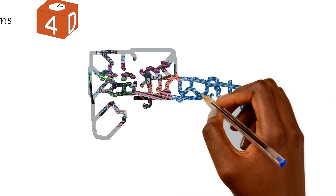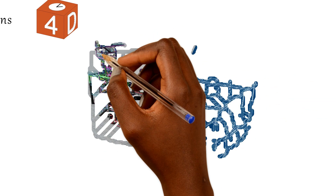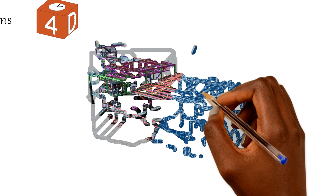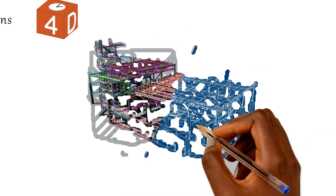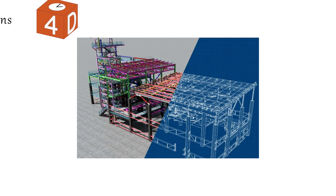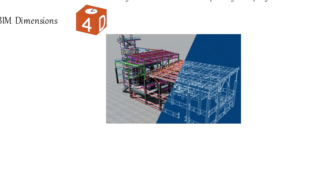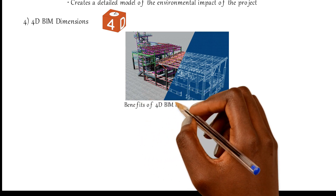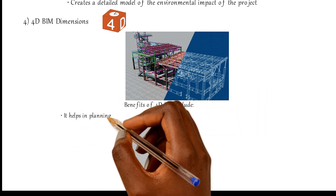Number four: 4D BIM dimensions. A 4D BIM model reveals additional dimensional information known as scheduling data or the time element. This model starts with a 3D BIM and then applies the fourth dimension — the time element. Hence, 4D BIM is 3D BIM plus the schedule.